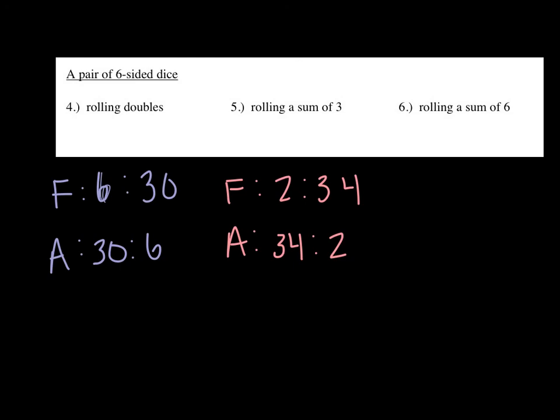So there are 5 options, different ways to roll a 6. Which means there are 31 options of ways to not roll a 6, or a sum of 6, rather.